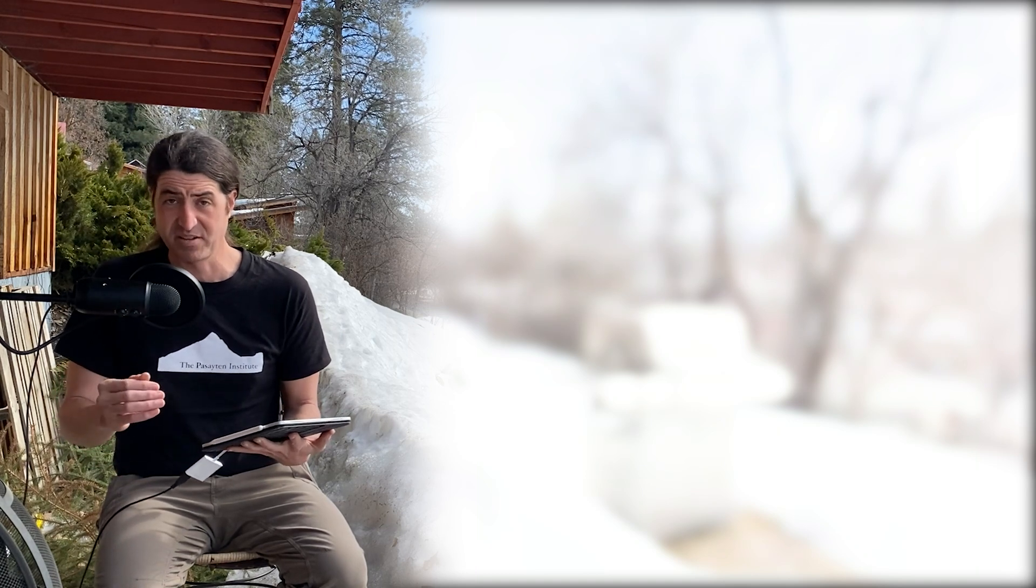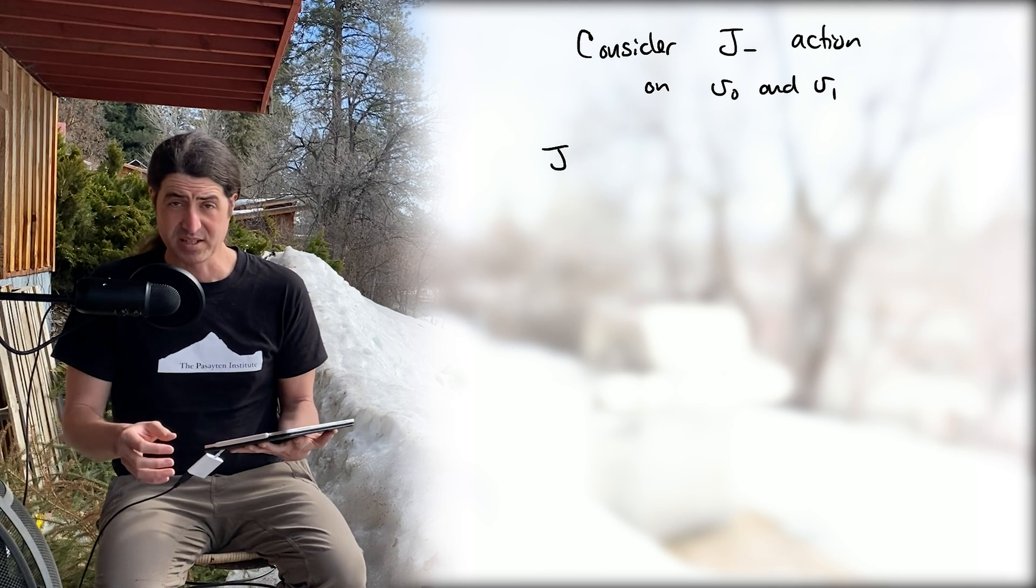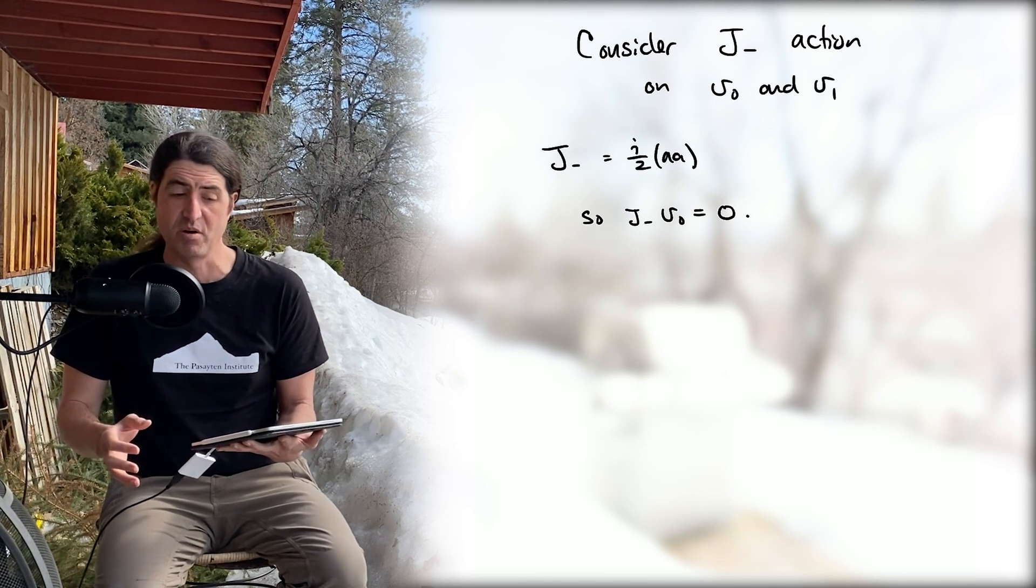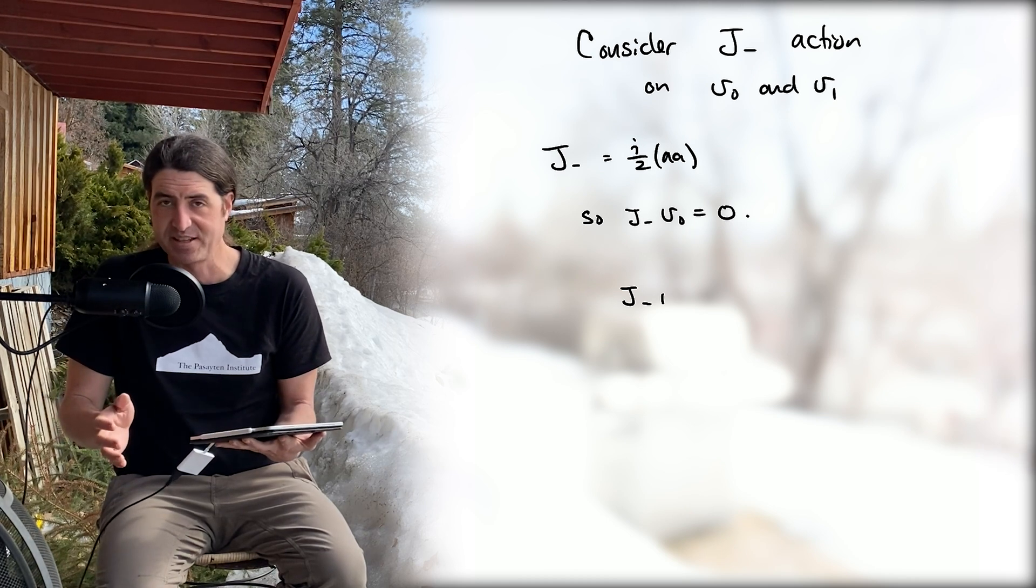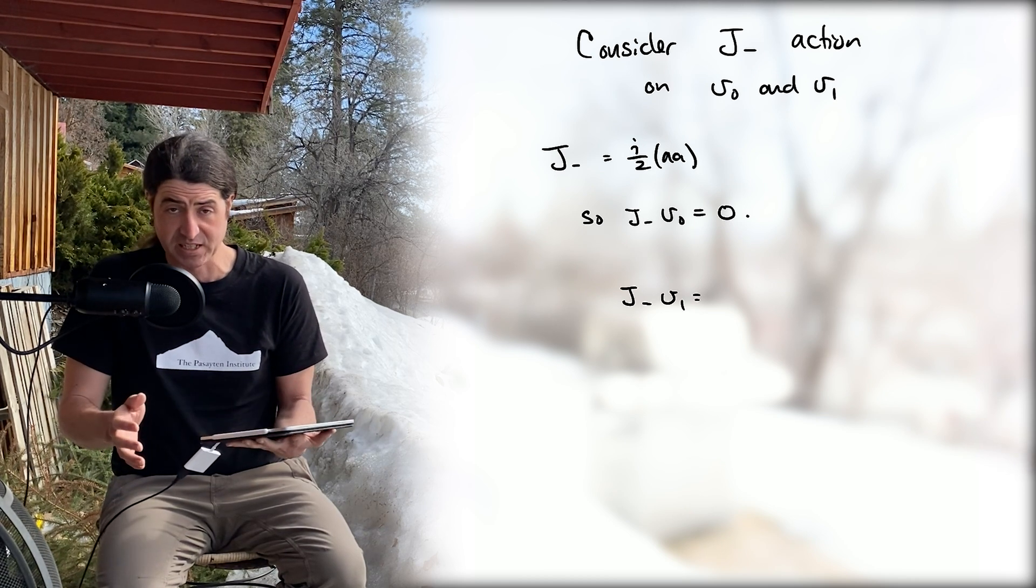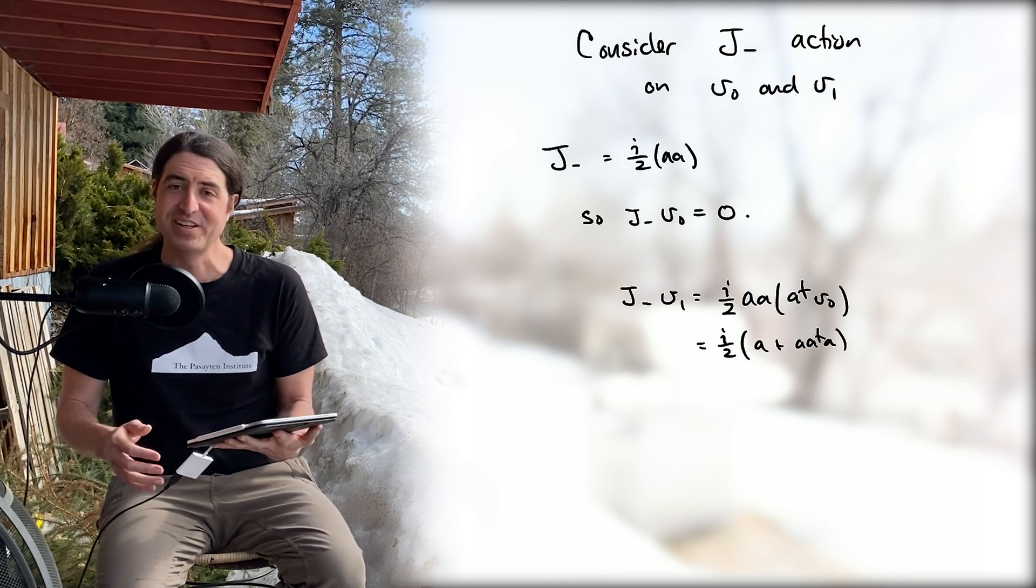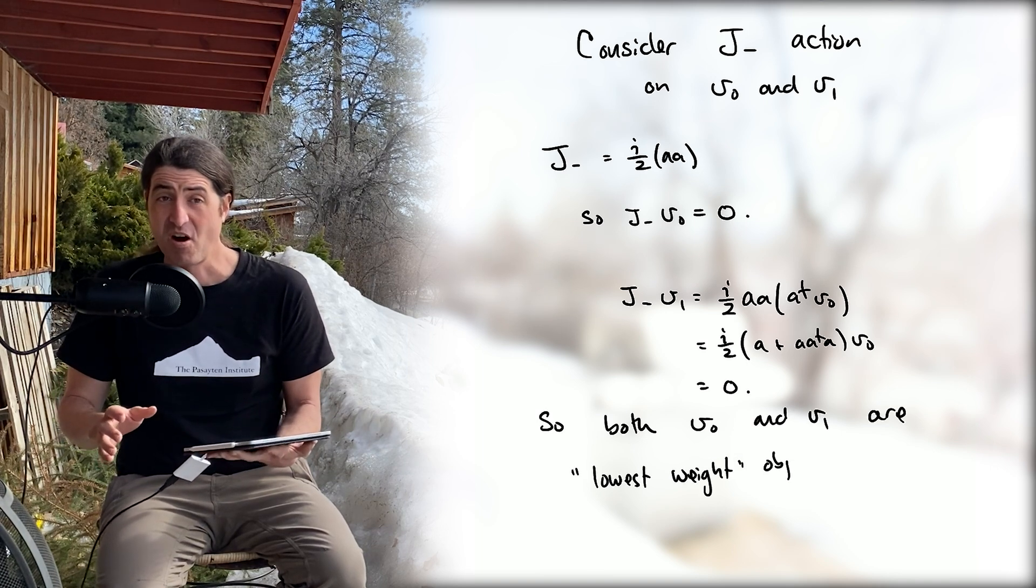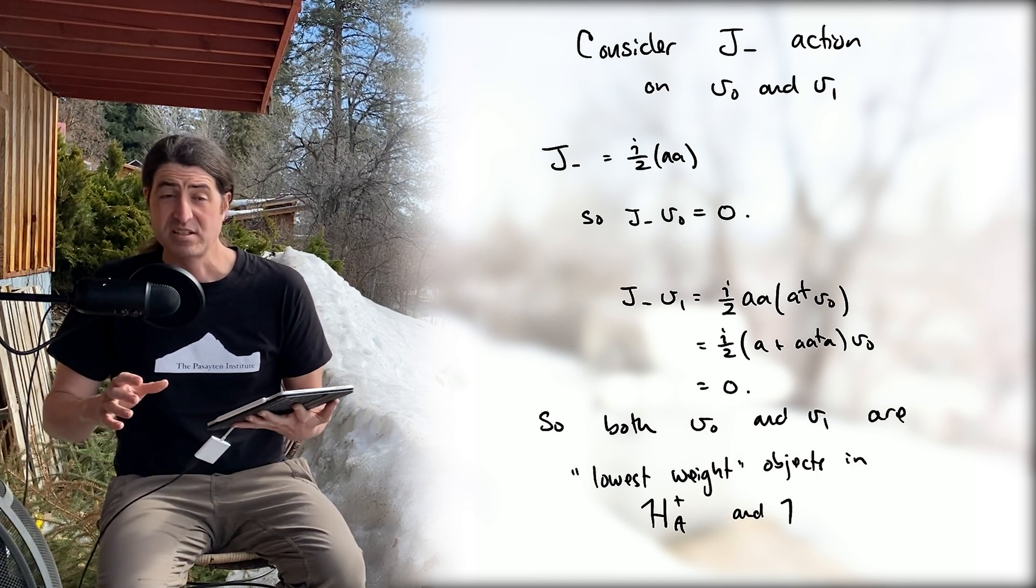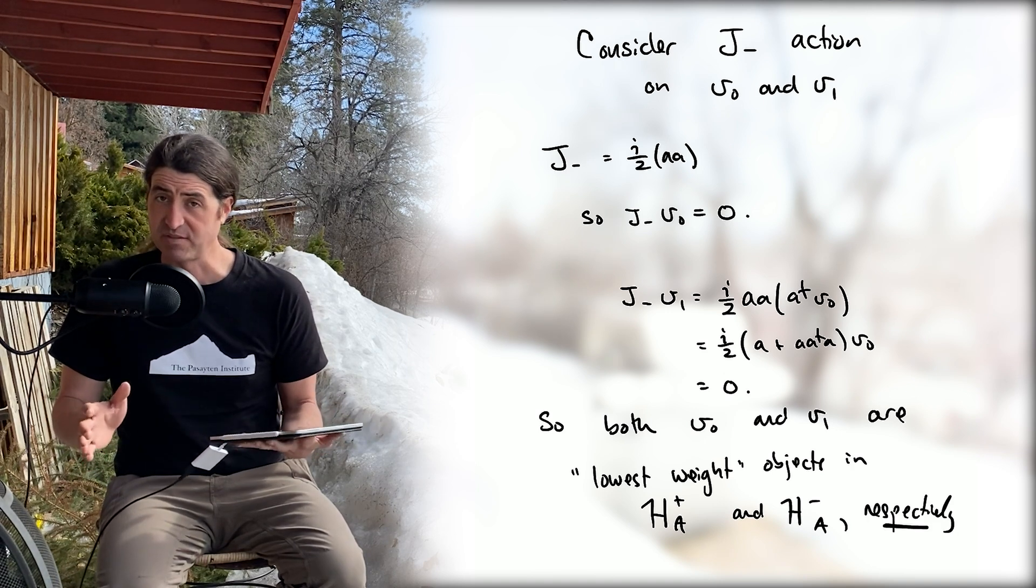Now let's explore that a little bit more. In particular, let's act on these objects with the operator J-. J- is a times a, so of course it annihilates v0. By some simple algebra, it's not hard to see that J- acting on v1, which is proportional to only one a dagger, also gives us zero. In a real sense, v0 and v1 are the lowest weight states for each of these irreducible representations of SU(2).